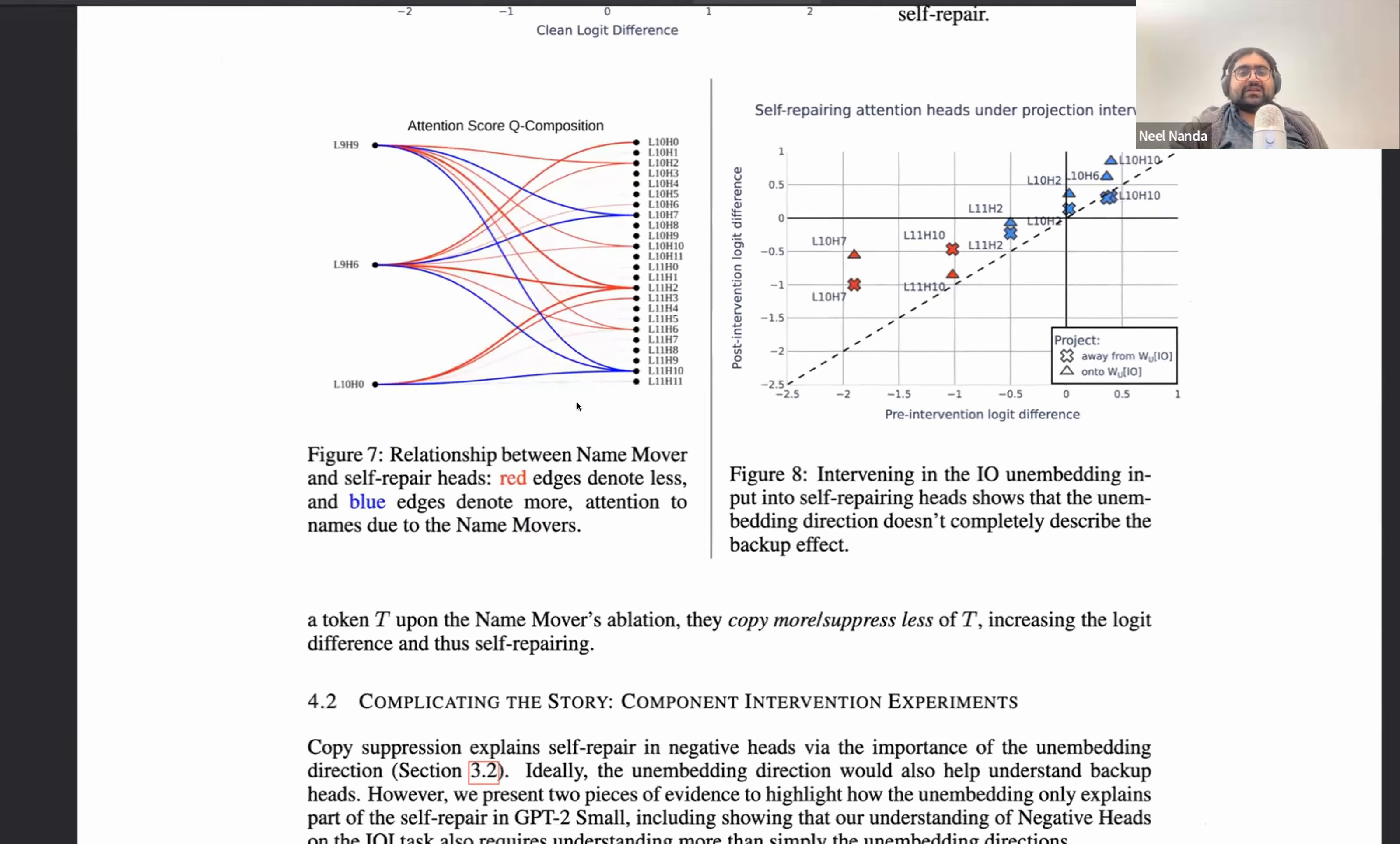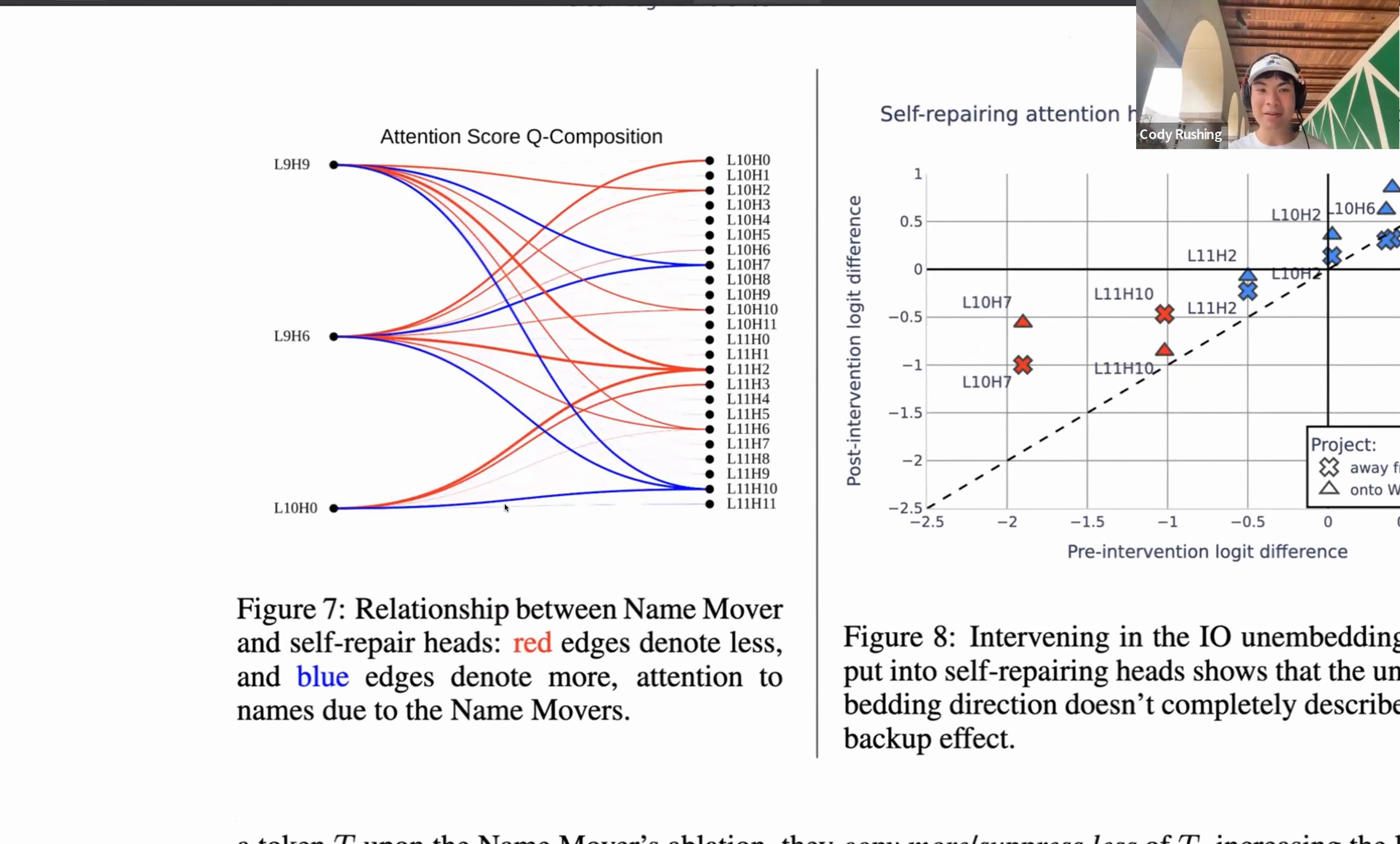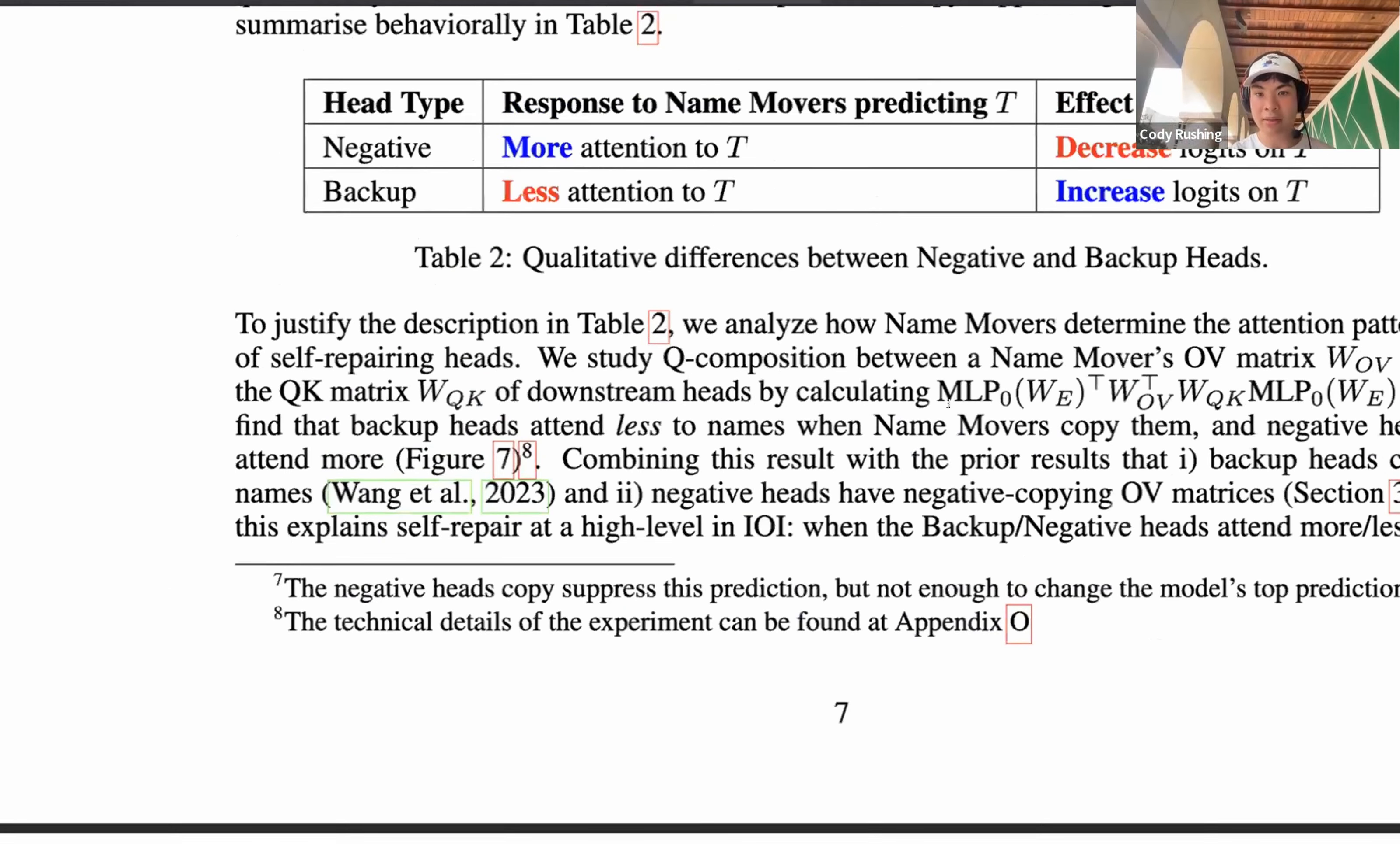Beautiful. All right, what else did you learn about this? One of the, I think, more interesting parts of this section is the matrix analysis that we did to actually isolate what we think are negative and backup heads. The way we did this is by taking the QK circuits that we discussed earlier and actually, instead of just looking at the QK circuit of one head by itself, we also compare it to an upstream head, the name mover heads in particular. And so the question we ask ourselves is whenever a name mover head outputs something, does a downstream head attend more or less to it as a result? The interesting thing we find here is that we find a clear collection of heads that whenever the name mover heads output something, they attend more to it.